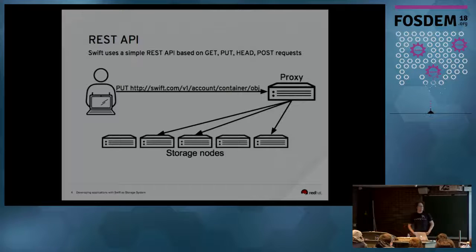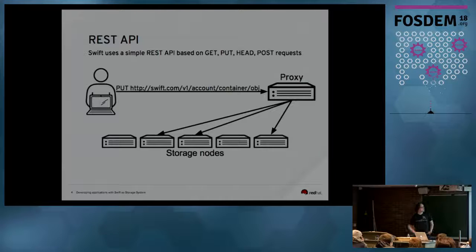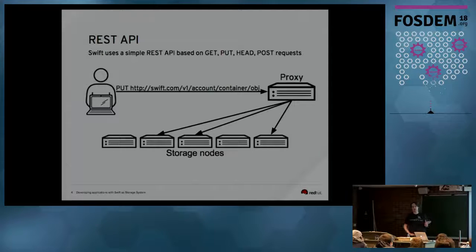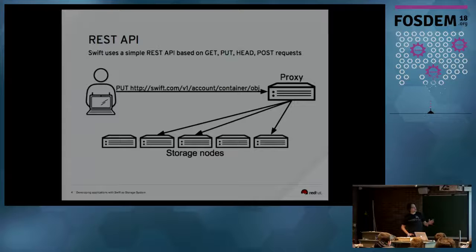When you're accessing a Swift cluster, you use a simple REST API. These are basically HTTP requests based on GET, PUT, HEAD, DELETE, and POST requests. As an end user or application developer, you're always talking to the Swift proxy. The proxy then, in the background, talks to your storage servers and makes sure that every object is replicated three times and stored in a durable way. When I talk about a Swift cluster in the following slides, I'm basically talking about interacting with a Swift proxy, because that's the actual endpoint for the application.